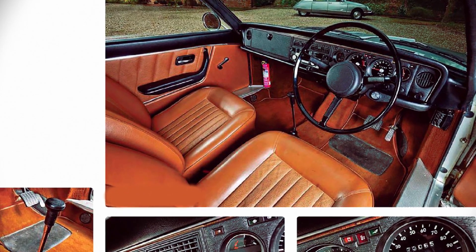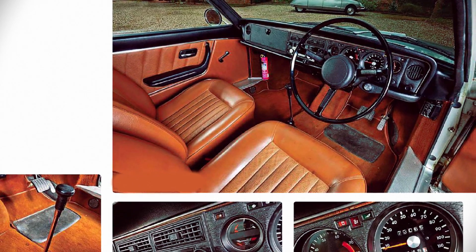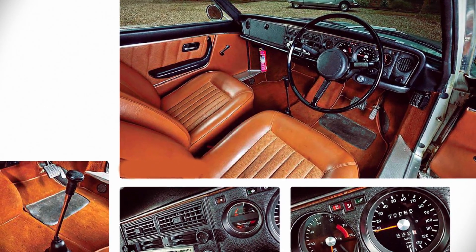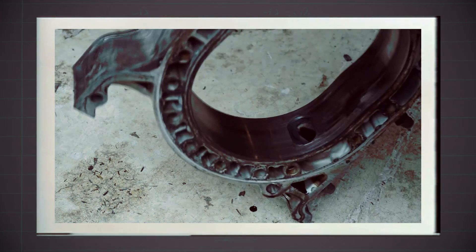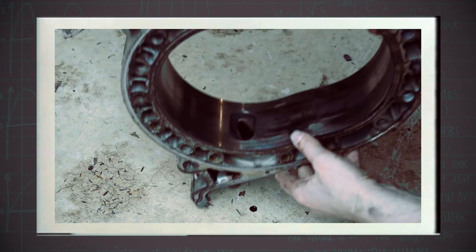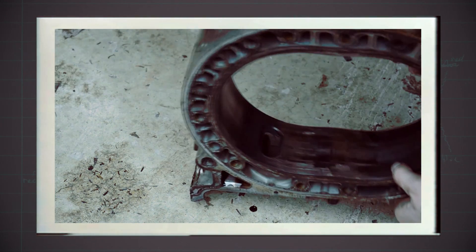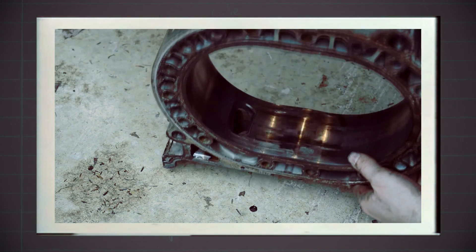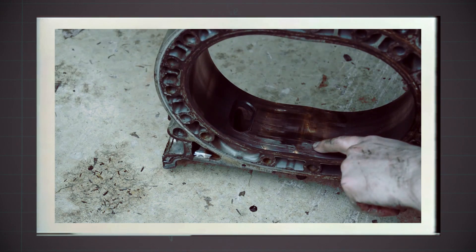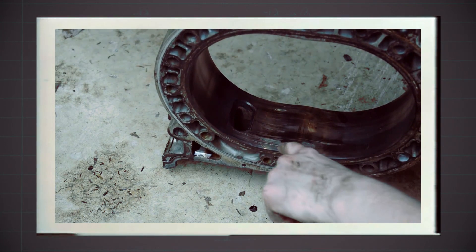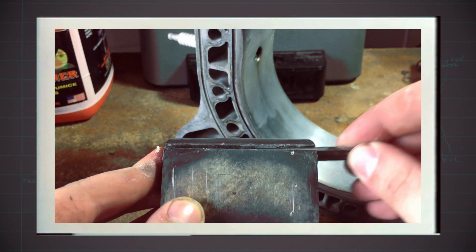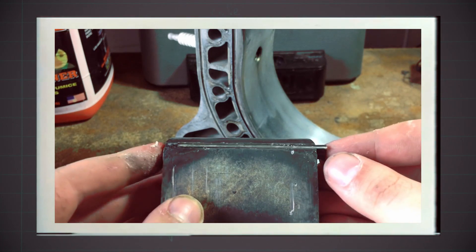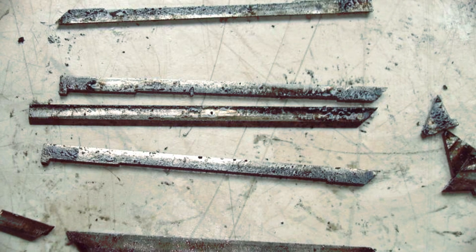Despite the praise, the RO80 developed an early reputation for unreliability. Its ultimate failure came from the engine's premature lifespan, generous warranty policy, and tarnished image, eventually bankrupting the firm. Early cars required an engine rebuild only after 50,000 km or 31,000 miles. Many of these failures were attributed to poorly designed apex seal tips, a common weak point later realized in rotary engines.